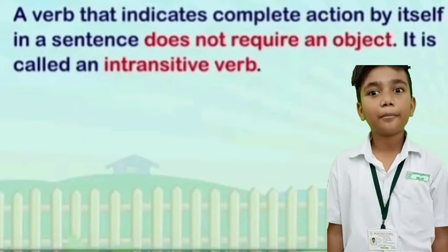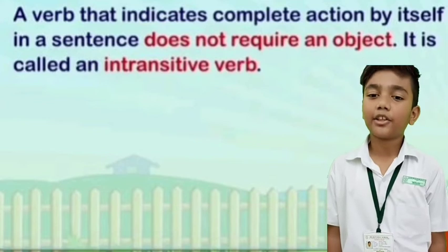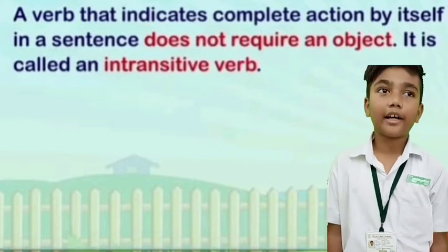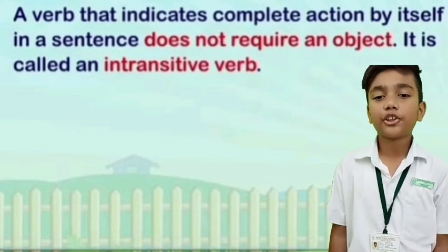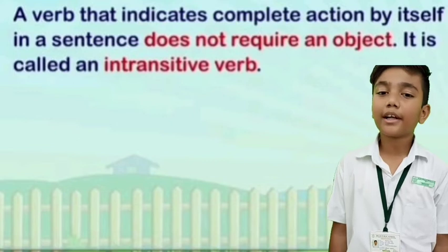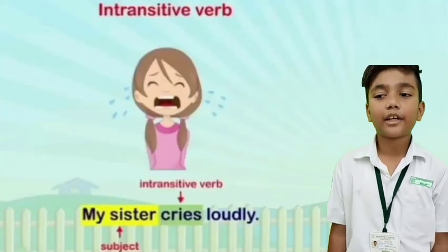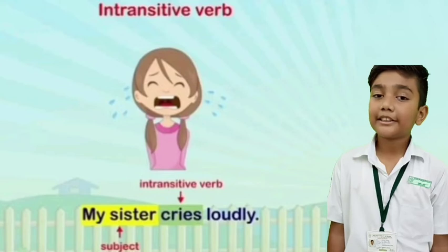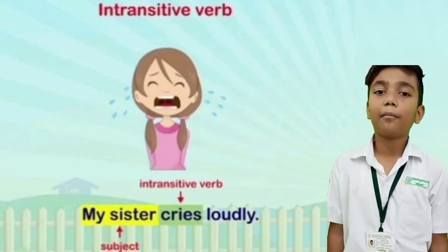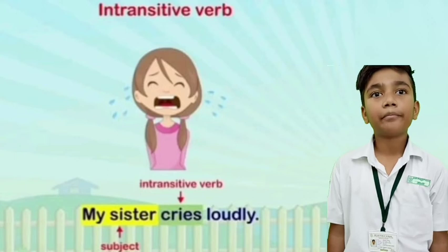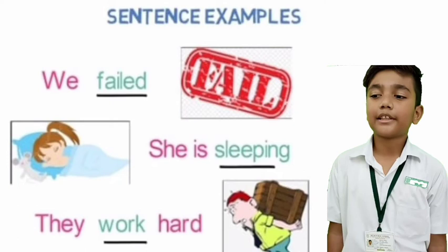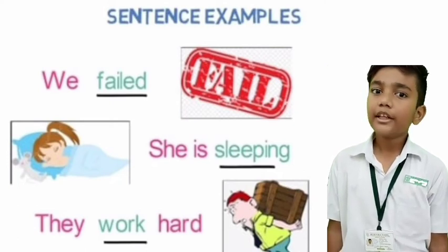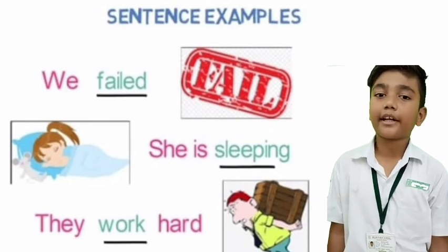Intransitive verb: a verb that indicates complete action by itself in a sentence and does not require an object is called an intransitive verb. Adverbs and prepositions usually follow intransitive verbs. For example, 'My sister cries loudly.' Here, my sister is the subject, cries is the intransitive verb, and loudly is the adverb. Another example: 'We failed here.' Failed is an intransitive verb as there is no direct object linked with it. 'She is sleeping.' Here, sleeping is an intransitive verb.